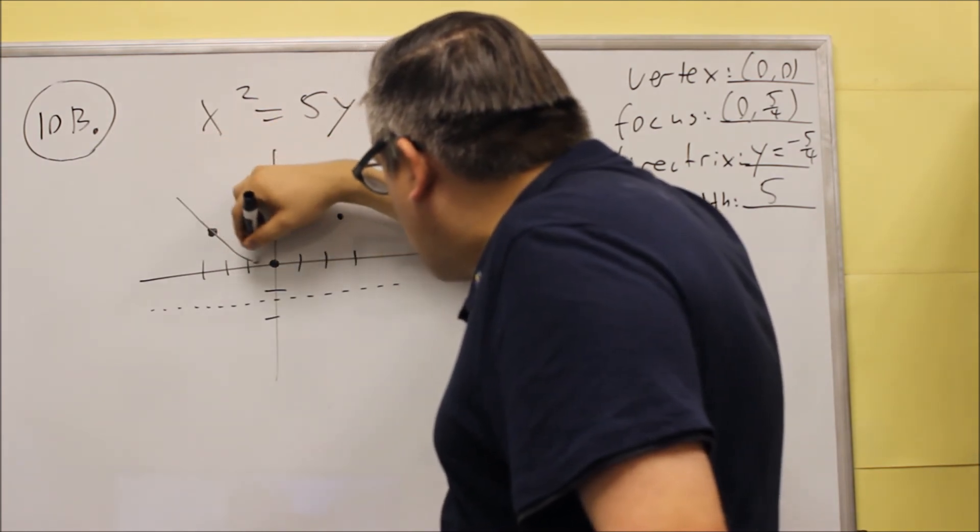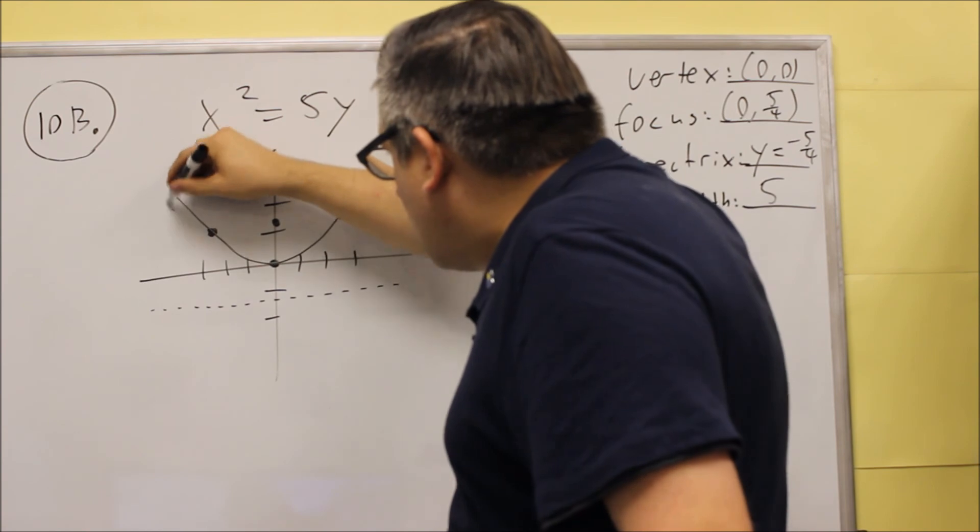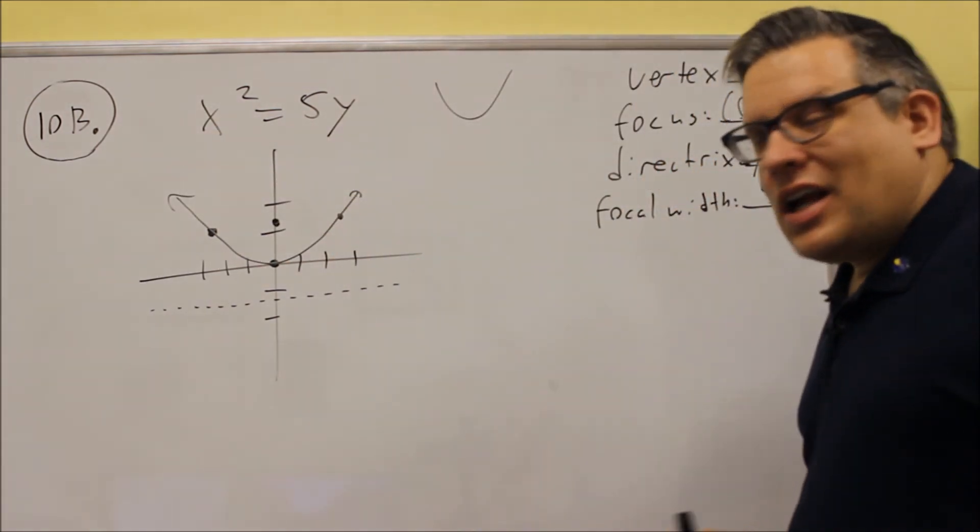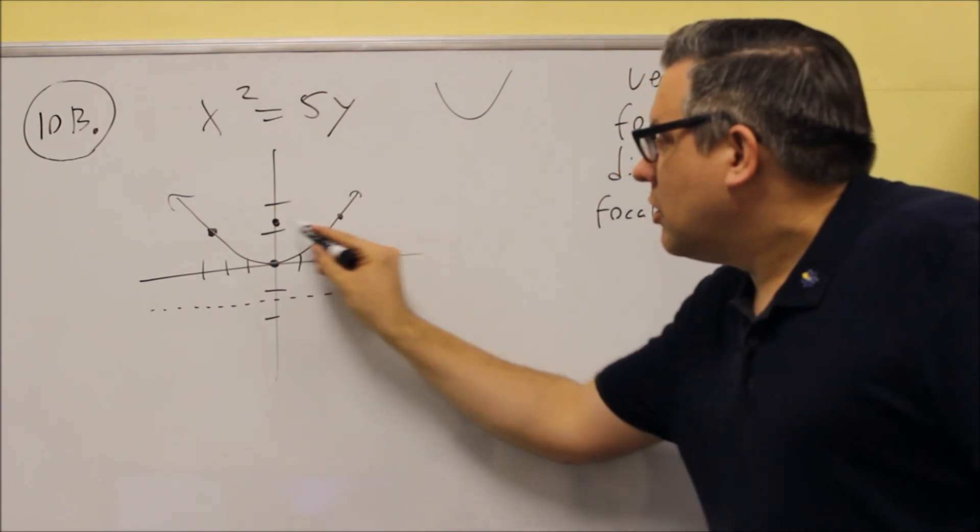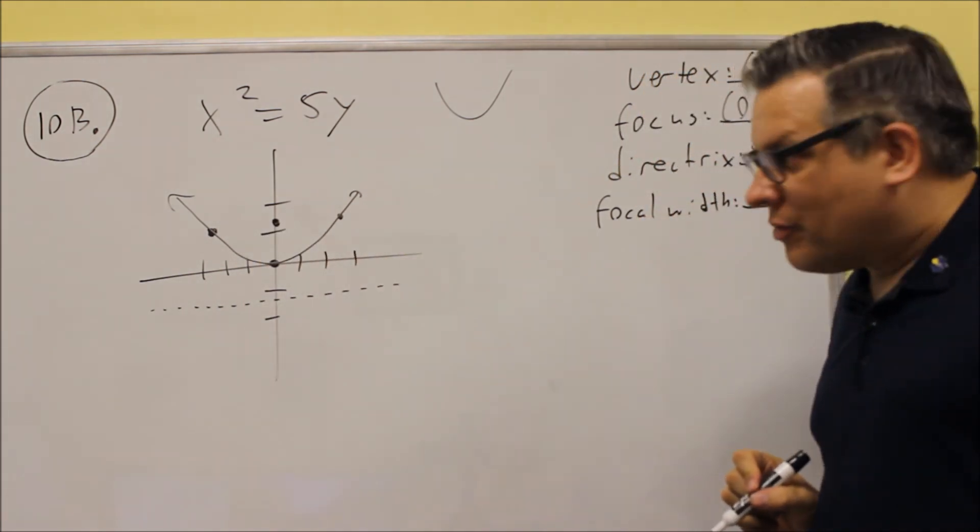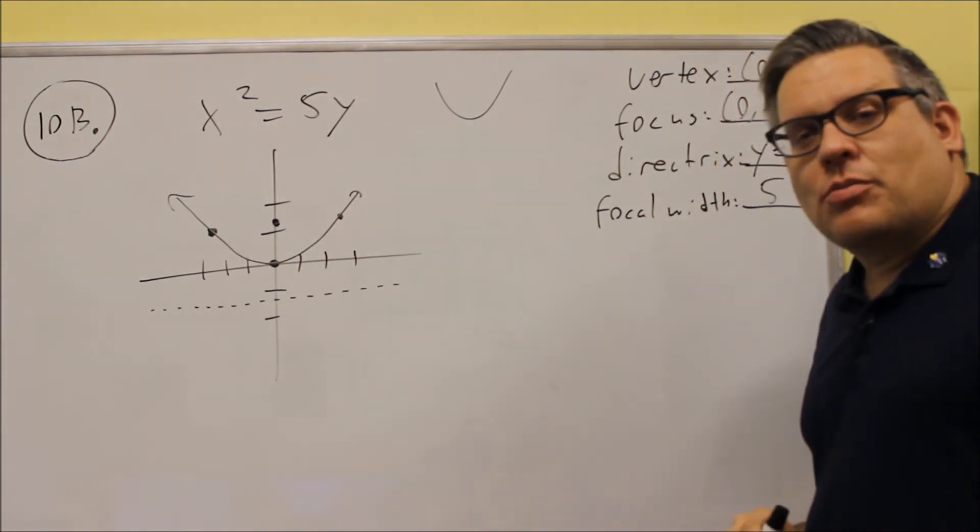We get these points here, and then we can connect it like that, and then that's going to be our graph. So, the width going from here to here will be 5, and that's the end of the problem.